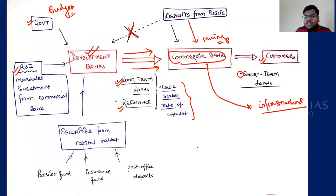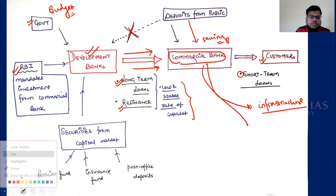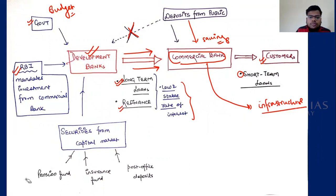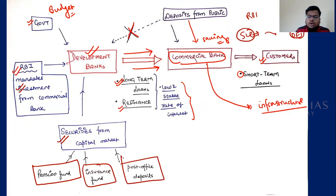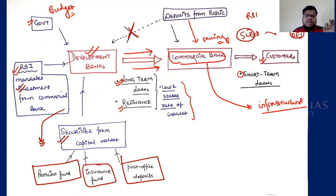The RBI can direct commercial banks — which must maintain SLR in government-approved securities — to put some portion of their SLR into Development Finance Institutions. Additionally, development banks can raise money from capital markets, pension funds, insurance funds, or post office deposits, providing returns to those investors. This is how development banks get their money to work on long-term projects.